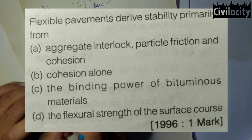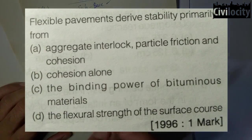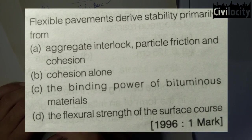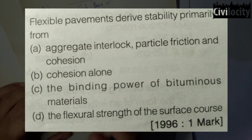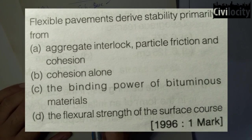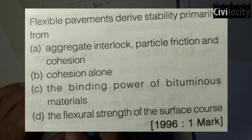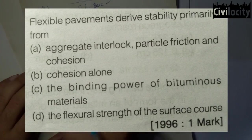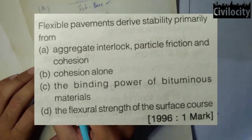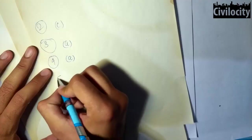The fourth question: flexible pavement derives stability primarily from what? Option D (flexural strength of surface course) is wrong — flexible pavement does not possess flexural strength. Option C (binding power of bituminous material) supports aggregate interlocking only. Option B (cohesion alone) is insufficient. Option A — aggregate interlock, particle friction, and cohesion together — is correct.